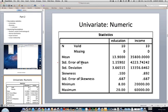Well, n is 10, and square root of 10 is about 3, and the standard deviation is 3.6. So we know that the standard error of about 1 should be correct. We also see that the skewness values are not extreme.